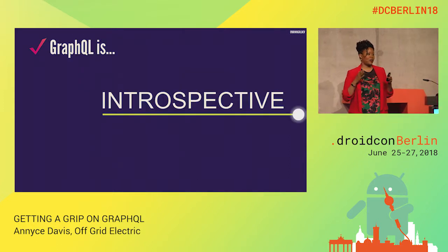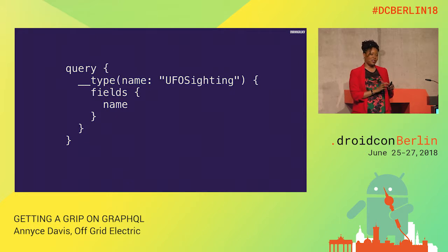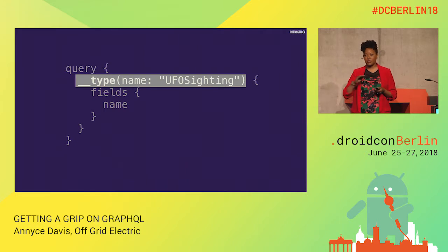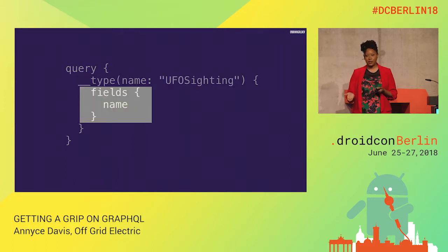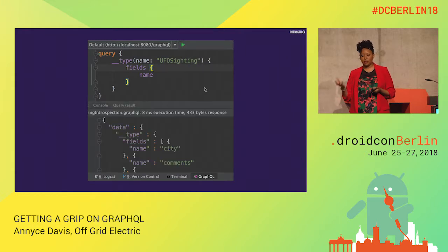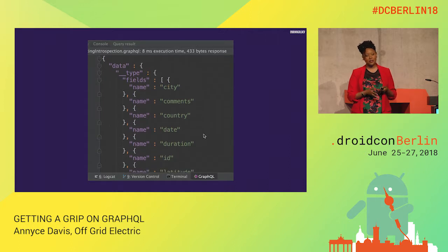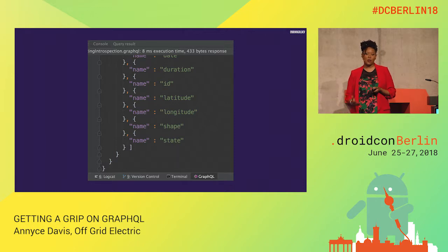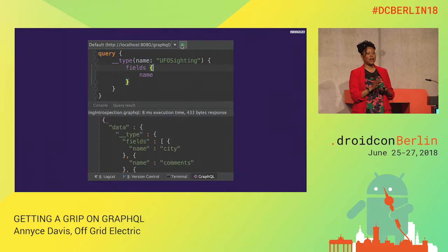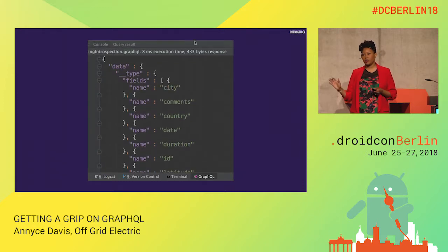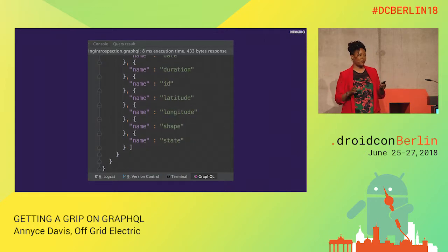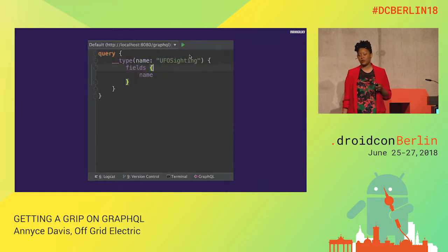The final thing is that GraphQL is introspective. This basically means that using the GraphQL language itself, you can find out about your GraphQL schema. For example, using the double-underscore type field and providing a name, you can send a query to find out the list of all the fields and their names. What's powerful about this is that it supports tools that allow you to look at your API, understand what's going on, and debug issues — which is why people get so excited about GraphQL introspection.